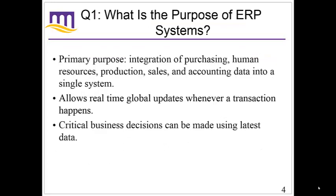So what is the purpose of an ERP system? Its primary purpose is the integration of purchasing, human resources, production, sales, and accounting data into a single system — which is pretty much the entirety of your organization. It allows real-time global updates whenever a transaction happens, and is often critical to making business decisions using the latest data. The value gained is that you get an instantaneous picture of everything going on in the organization, cutting out the problems that come from disparate systems and competing software. It's all in one place, so it's really easy to find what you need.